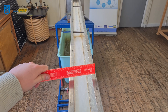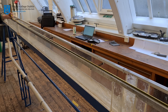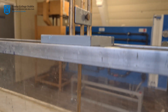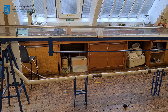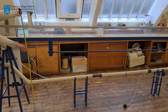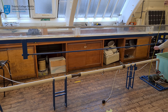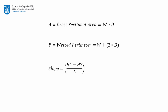The geometric properties of the channel and flowing fluid are then measured. The required dimensions are: length of channel, width of channel, depth of flow (which is measured using a depth gauge), and the height difference of the water surface between the starting point h1 and ending point h2 of the channel. These dimensions can then be used to calculate the cross-sectional area, wetted perimeter, slope of the channel and hydraulic radius.